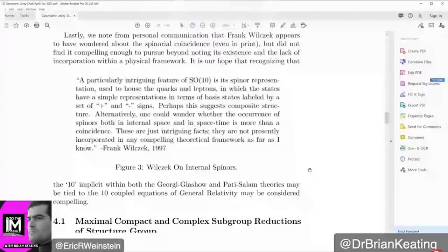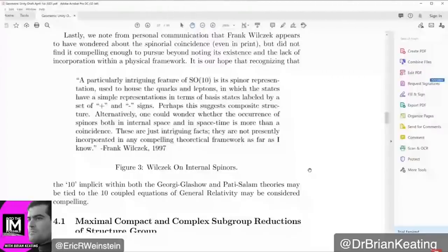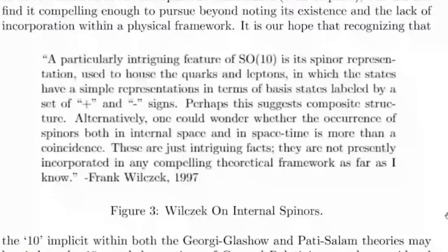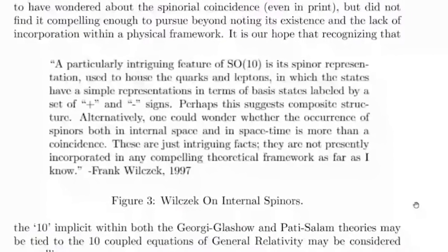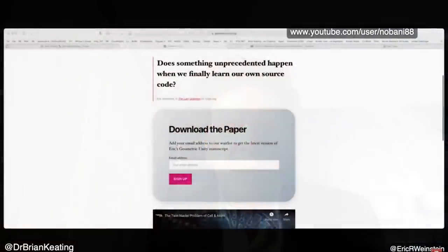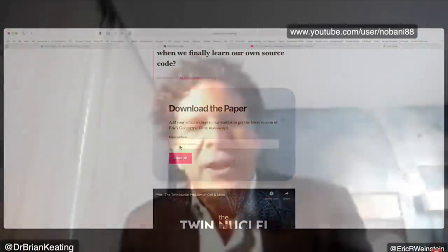Now here's the sentence that just floored me. Alternatively, one could wonder whether the occurrence of spinners both in internal space and in space-time is more than a coincidence. And then he pulls back immediately. These are just intriguing facts. They are not presently incorporated in any compelling theoretical framework as far as I know. Geometric unity is that compelling framework. And one of the things I'm looking to do is I'm looking to get constructive feedback from people who want to help me succeed as opposed to people who just want to be dicks. And what I would love is to bring your positive energy. Go to geometricunity.org.